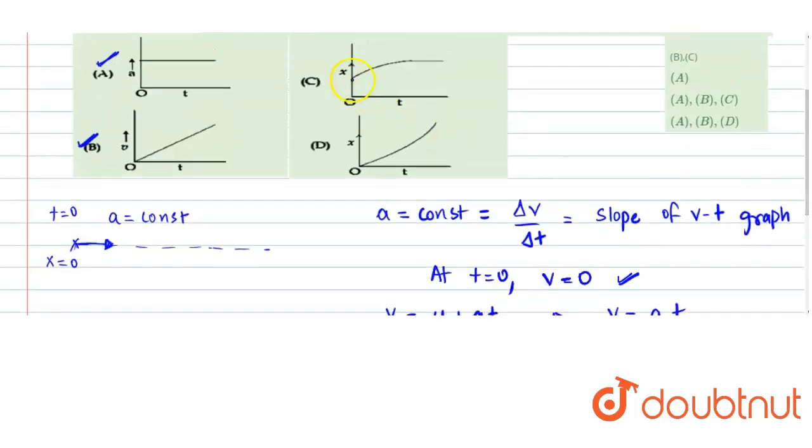But if we see in option C, it has at t equals 0 some x-naught position. So that clearly makes it incorrect.